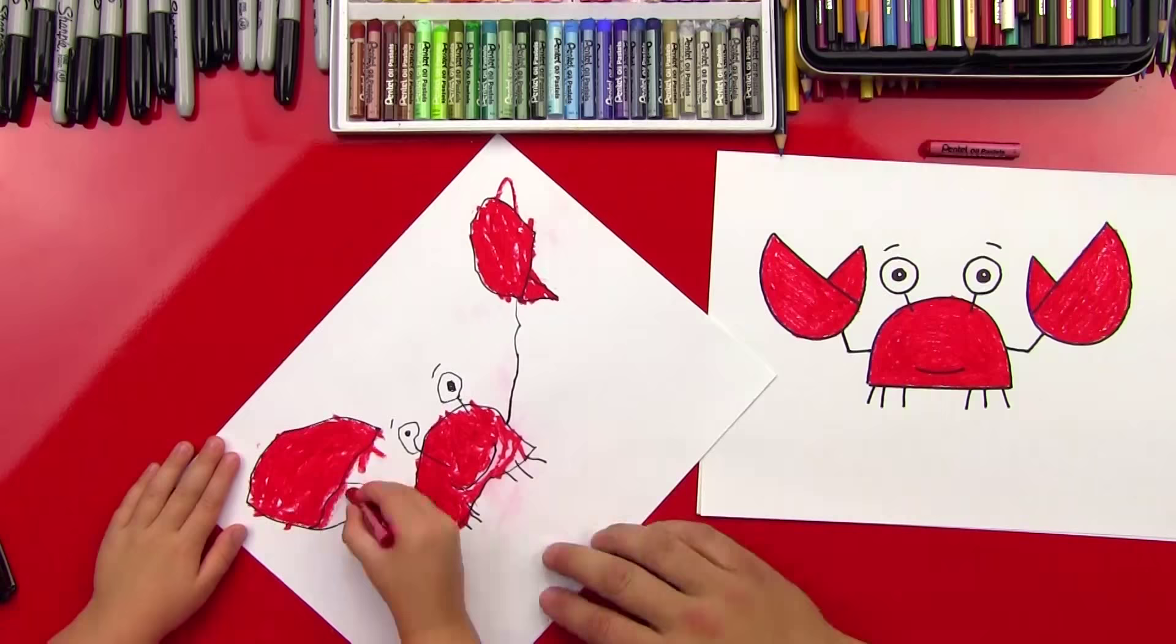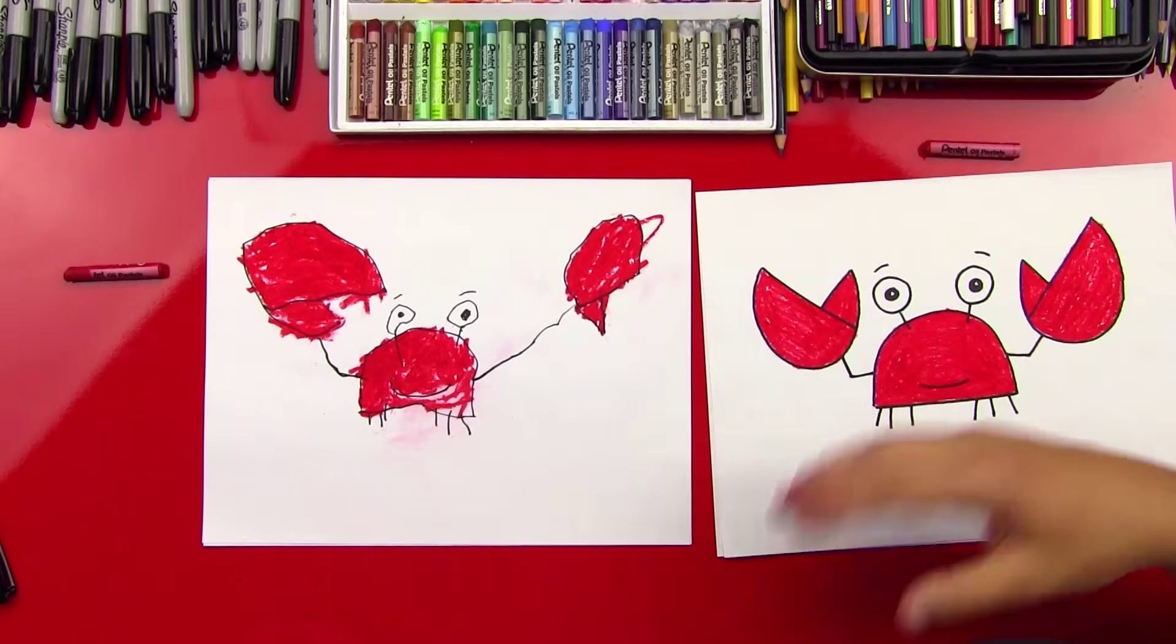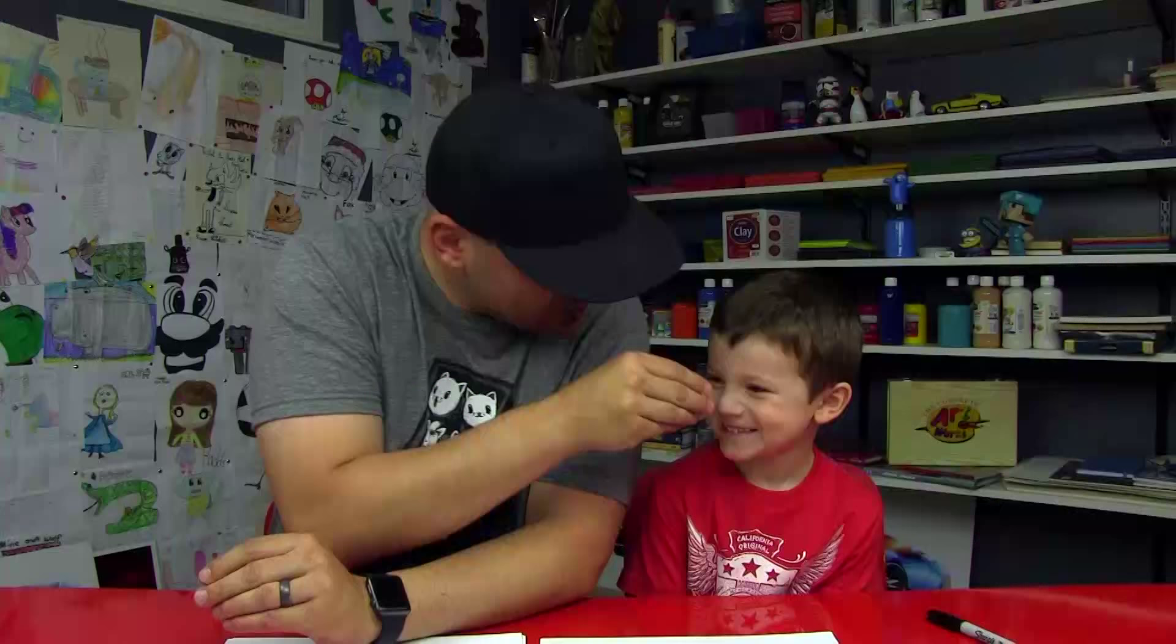Austin, good job on your crab, man. Give me five. What was your favorite part? The pinchers! The pinchers? Those are my favorite part too. Like, you can pinch your nose. We hope you guys had a lot of fun drawing and coloring your crabs with us. Remember, this is a super easy, super fun activity for young artists, right dude? How old are you again? Three. Yes, three years old. We'll see you later, our friends. Goodbye.